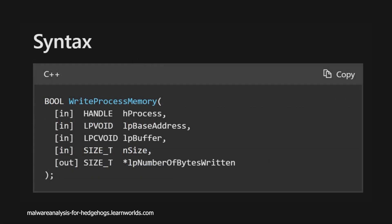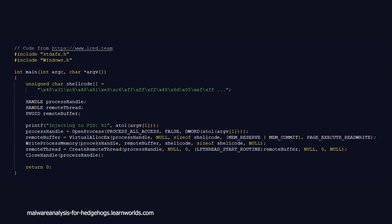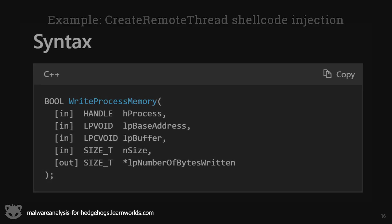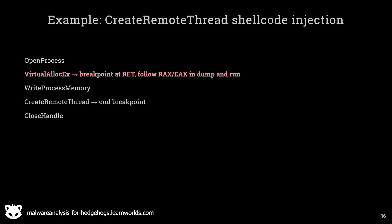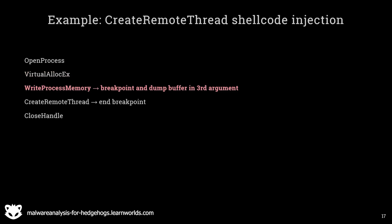Now let's look at WriteProcessMemory. It has an LP buffer argument, which is an input buffer containing the data that has to be written to the remote process — in our code, this contains the shellcode data. So the first way to dump the unpacked code is to place a breakpoint at the return of VirtualAllocEx, follow the address in RAX or EAX in a dump window, run until the end breakpoint, and then inspect that buffer. The second way is to place a breakpoint on WriteProcessMemory, and immediately when this breakpoint hits, dump the buffer that is in the third argument.